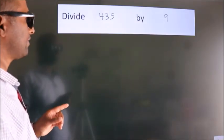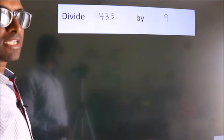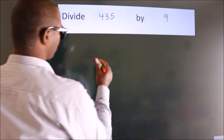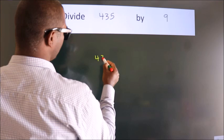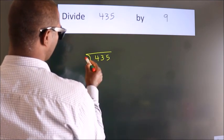Divide 435 by 9. To do this division, we should frame it in this way. 435 here, 9 here.